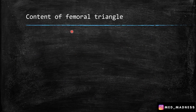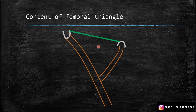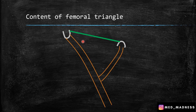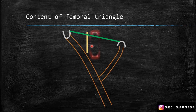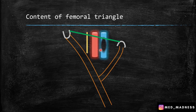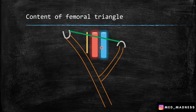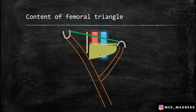The contents of the femoral triangle: starting from the lateral-most, you can see the femoral nerve. Medial to the femoral nerve is the femoral artery. Medial to the femoral artery is the femoral vein. Note that this artery and vein are enclosed by a sheath which is called the femoral sheath.